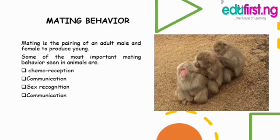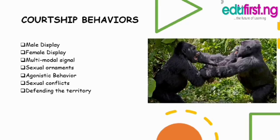Courtship behavior: Examples of courtship behavior seen in animals are — number one, the male display; number two, the female display; number three, the multimodal signal; number four, the sexual ornament; number five, the agonistic behavior; number six, the sexual conflict; and number seven, defending the territory.